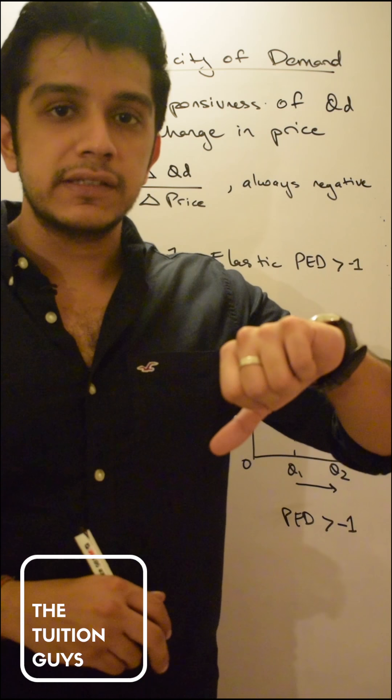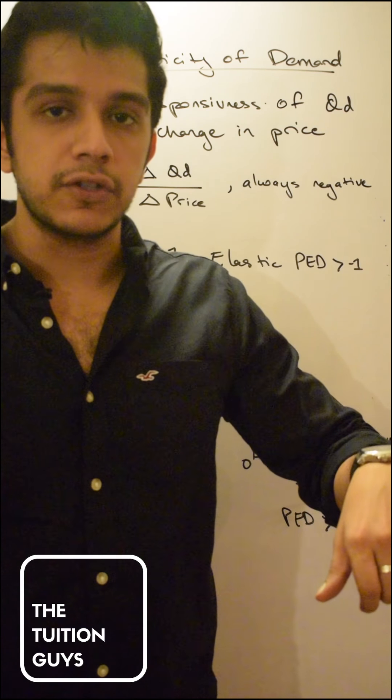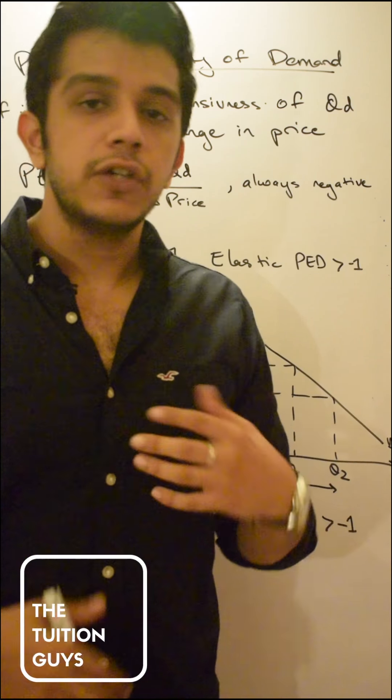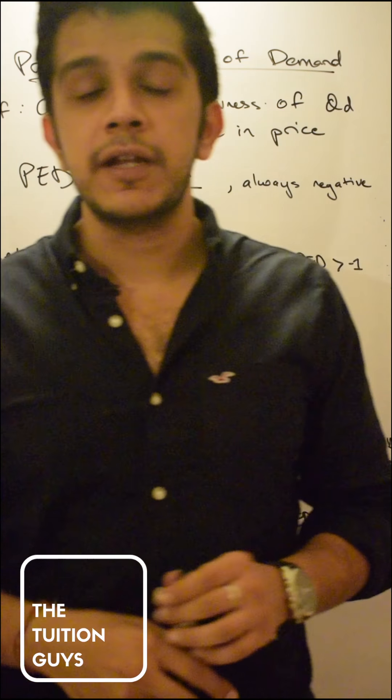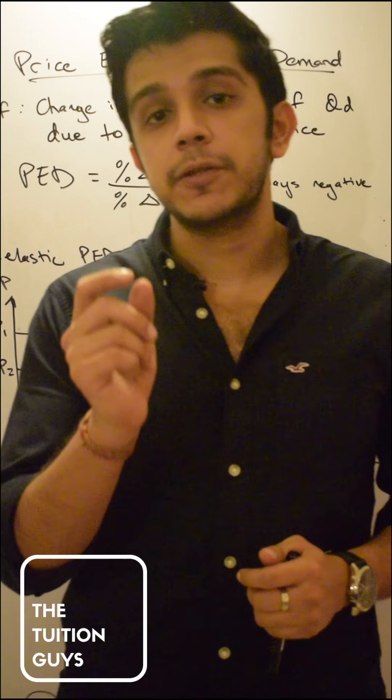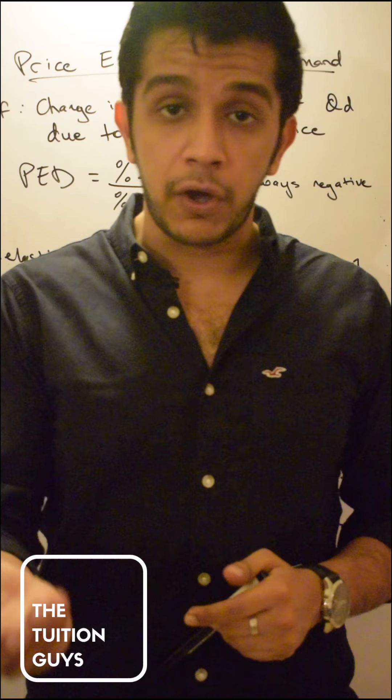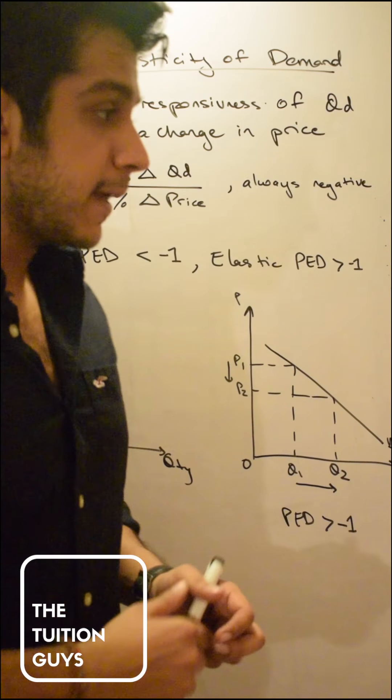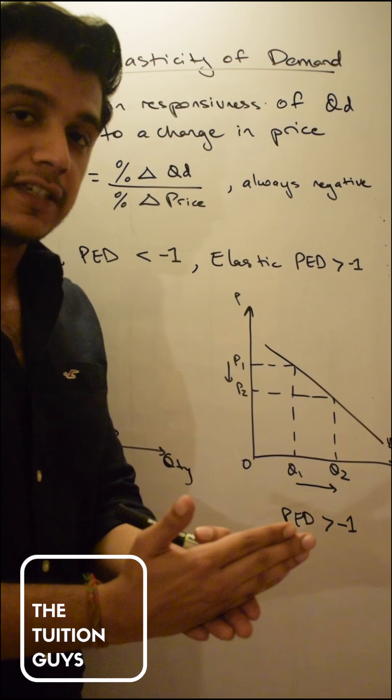So basically in price elasticity of demand and price elasticity of supply we talk about the proportionate change in quantity demanded due to a change in price. Now remember we're always going to be fixing price.